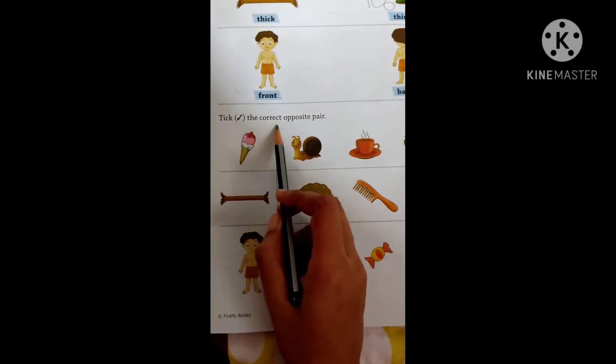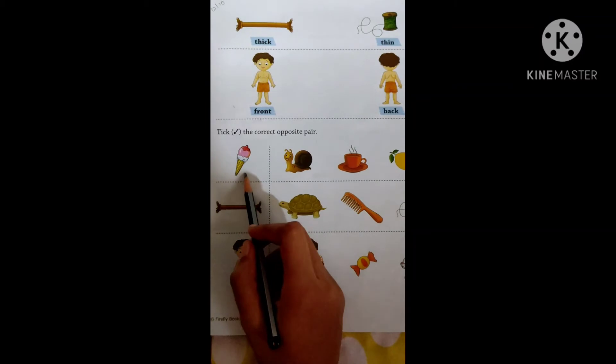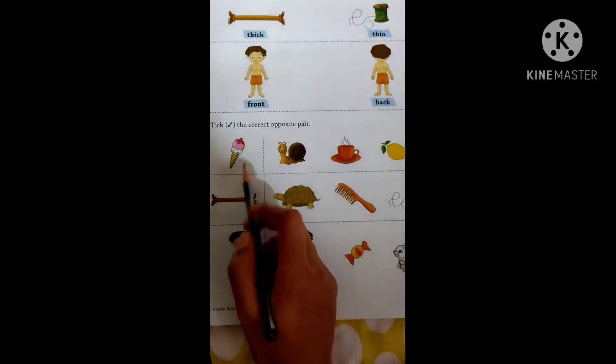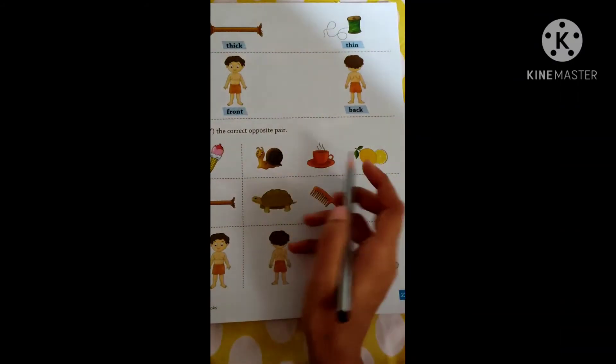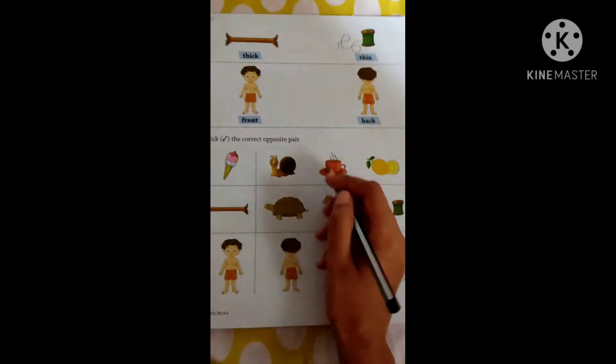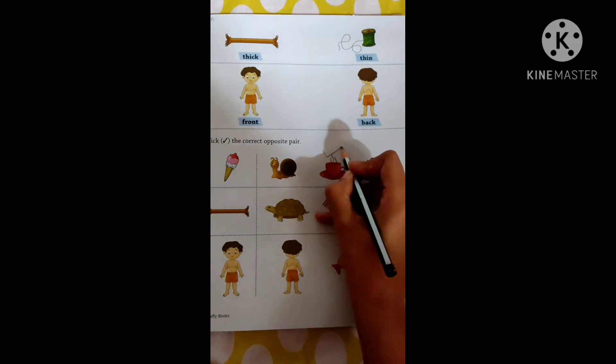Tick the correct opposite pair. Now what is this? Ice cream. Ice cream is cold. Now what will be the opposite word? Is this sour? No. Ice cream is cold, so hot. So here we are going to tick it.